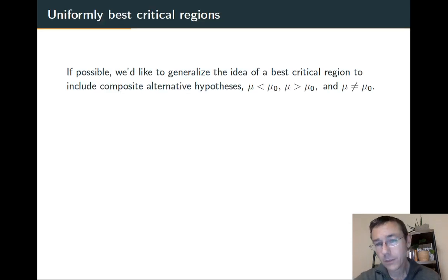So up till now we've only been able to talk about best critical regions for cases where we had a simple alternative hypothesis that μ was equal to μ sub a for some specific value μ sub a. But in practice we frequently run into what we call composite alternative hypotheses that are based on an inequality of some sort.